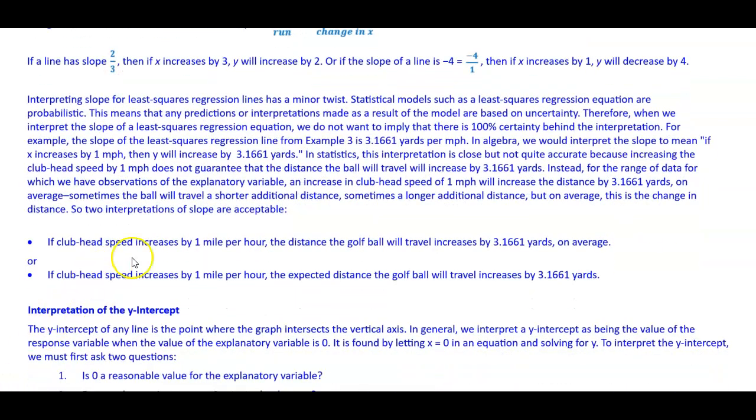If the club head speed increases by 1 mile per hour, the distance the golf ball will travel increases by 3.1661 yards on average. Or, if club head speed increases by 1 mile per hour, the expected distance the golf ball will travel increases by 3.1661 yards.